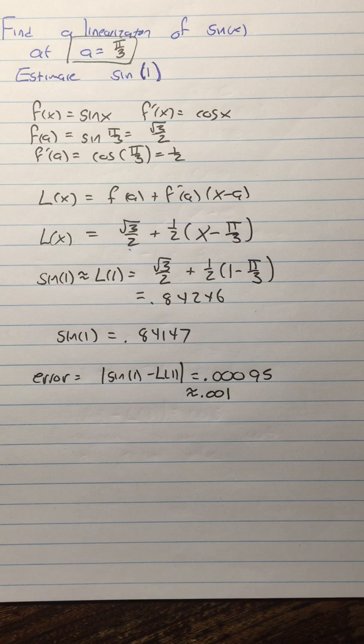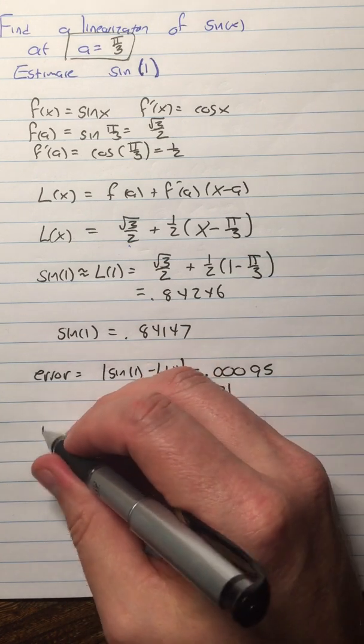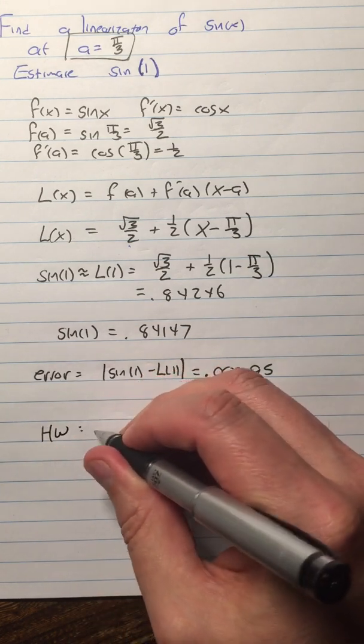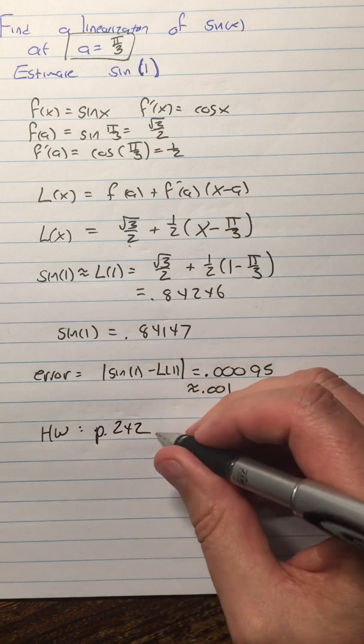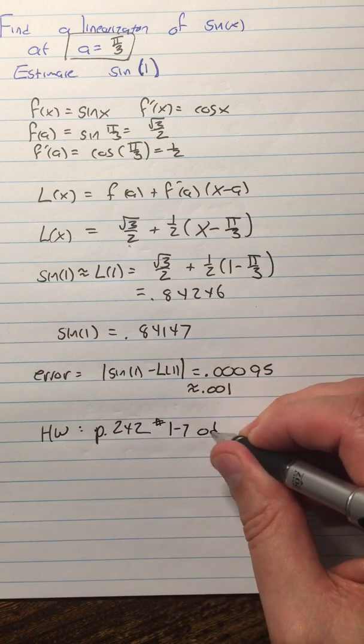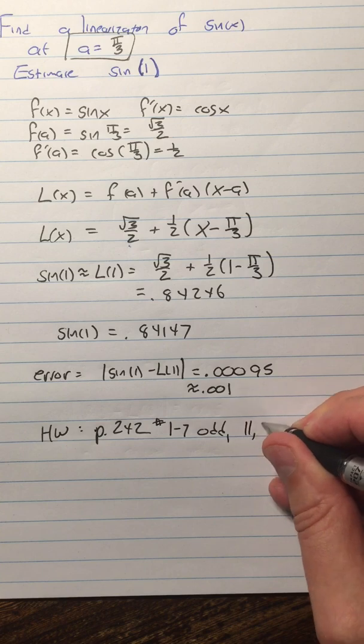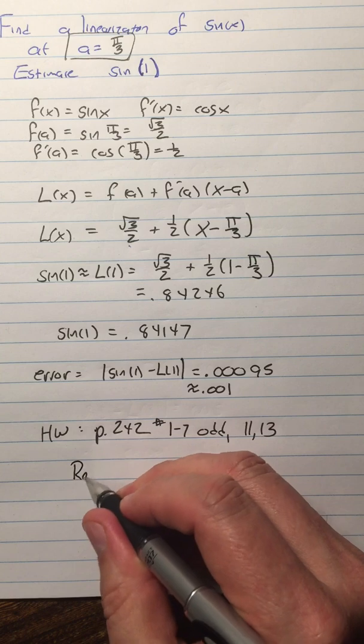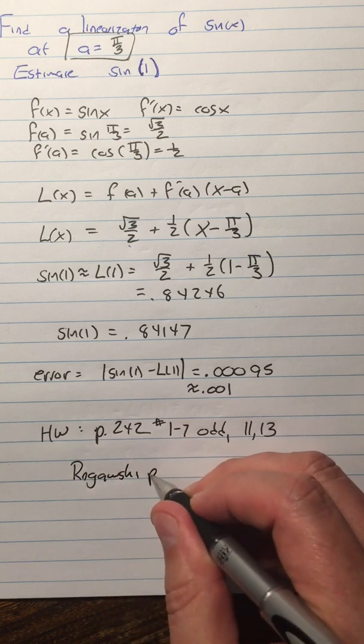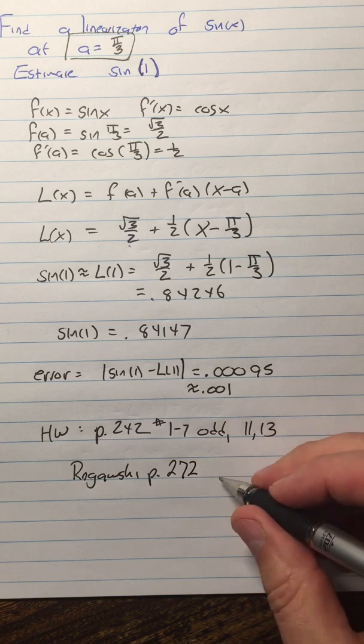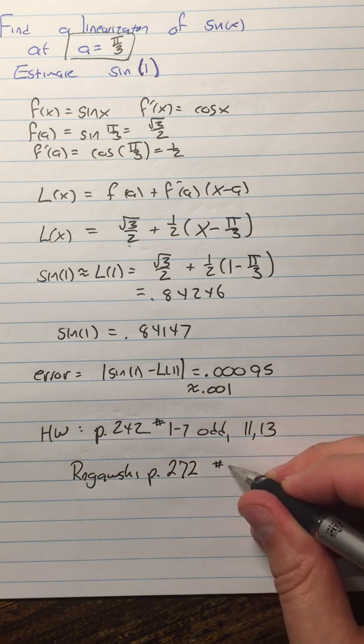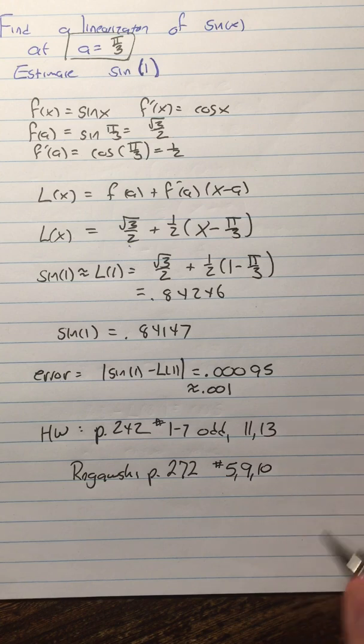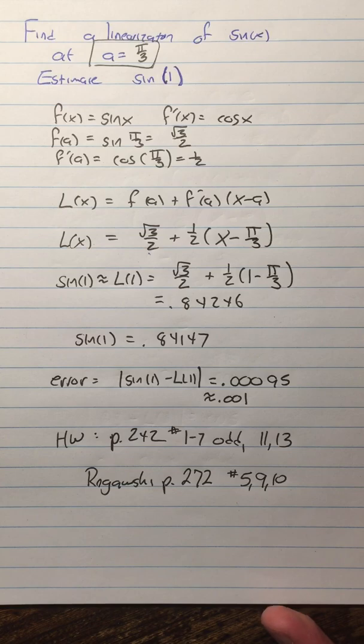So you get homework for this. You get page 242, number 1 through 7 odd, number 11 and number 13. That's chapter 4 in your book. And then also I have attached a Rogawski page, Rogawski page 272, because he just has three pretty cool problems in there: number 5, 9, and 10. I try not to get too repetitive with these. These are some cool problems. So there you go. That's your homework. And that is linearization.